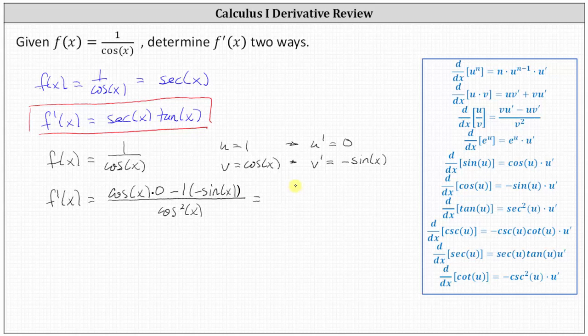Simplifying, we have sine x divided by cosine squared x.